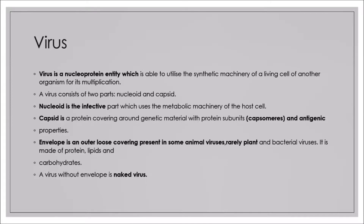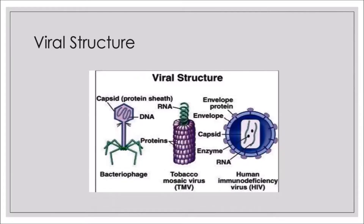Three different virus structures are shown: bacteriophage, in which DNA is present inside a protein sheath; Tobacco Mosaic Virus (TMV), in which RNA is the genetic material enclosed within a protein envelope; and Human Immunodeficiency Virus (HIV), which has an outer lipid envelope, a capsid beneath it, and RNA as the genetic material along with enzymes inside.